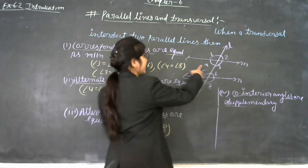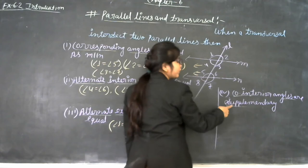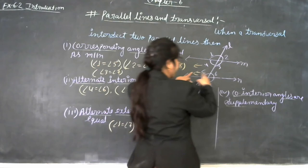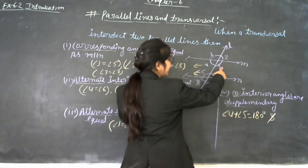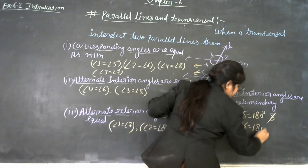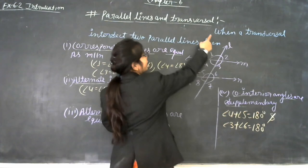The next property is co-interior angles. Co-interior angles are same-side interior angles. When a transversal intersects two parallel lines, the co-interior angles are supplementary — meaning their sum equals 180 degrees. So angle 4 plus angle 5 equals 180 degrees, and angle 3 plus angle 6 equals 180 degrees, because these are co-interior angles.